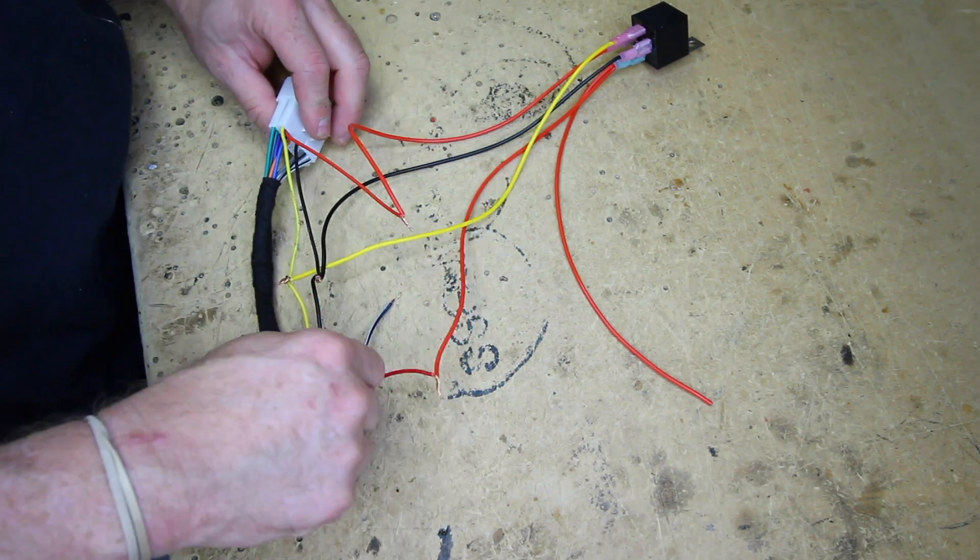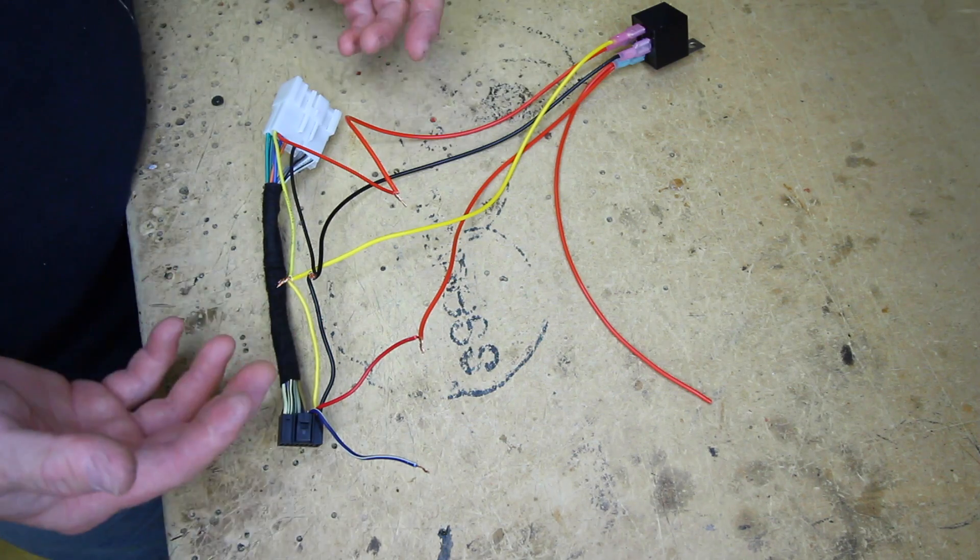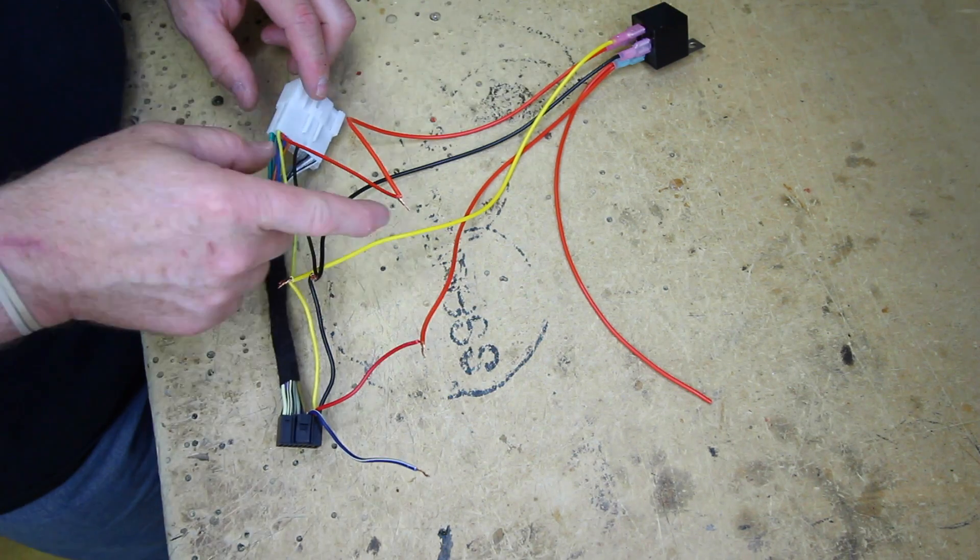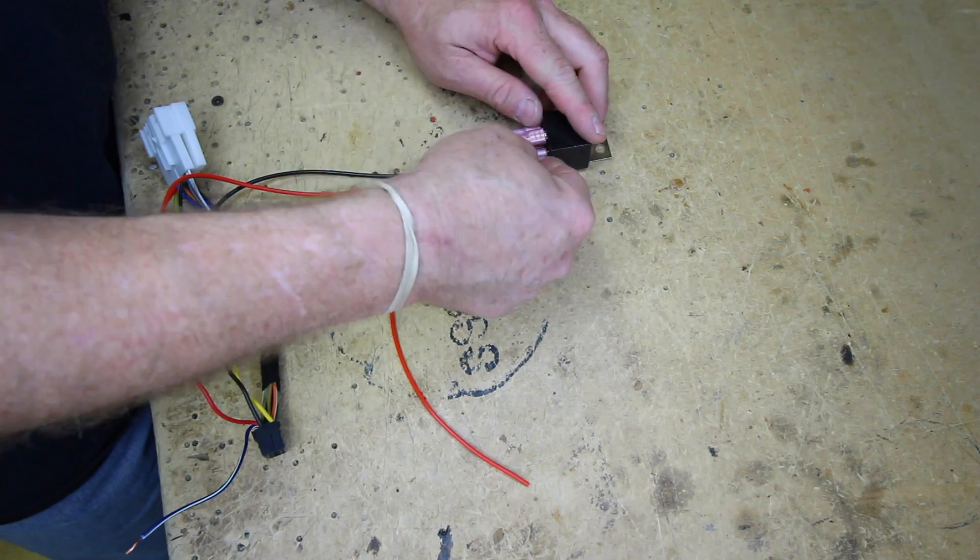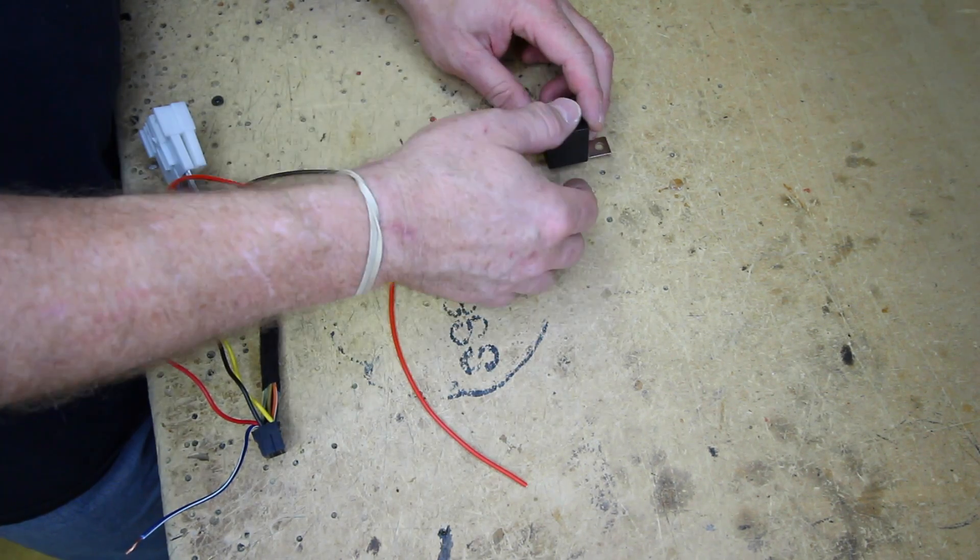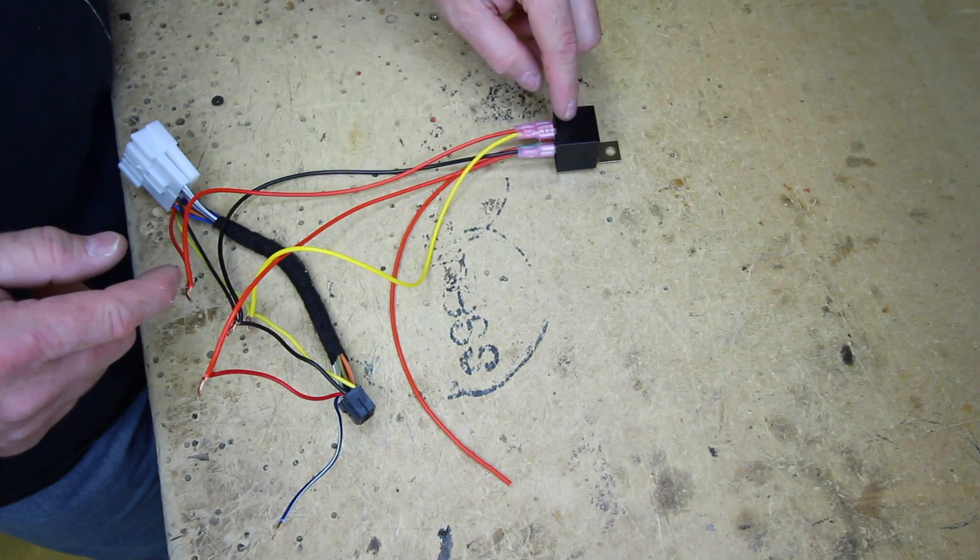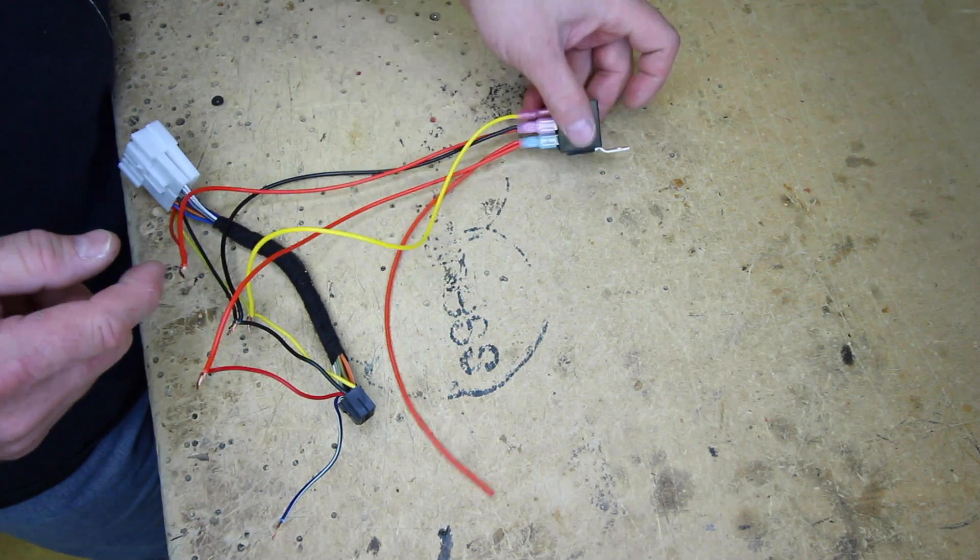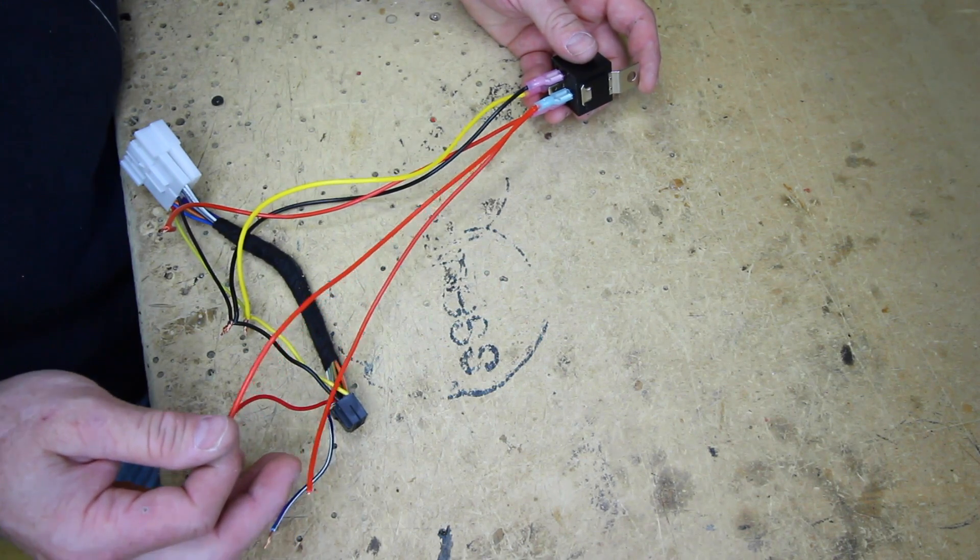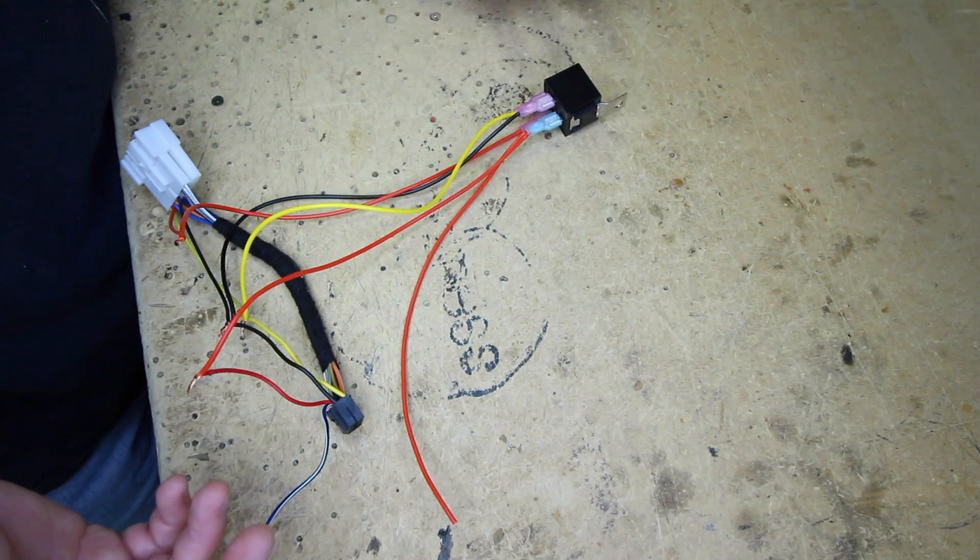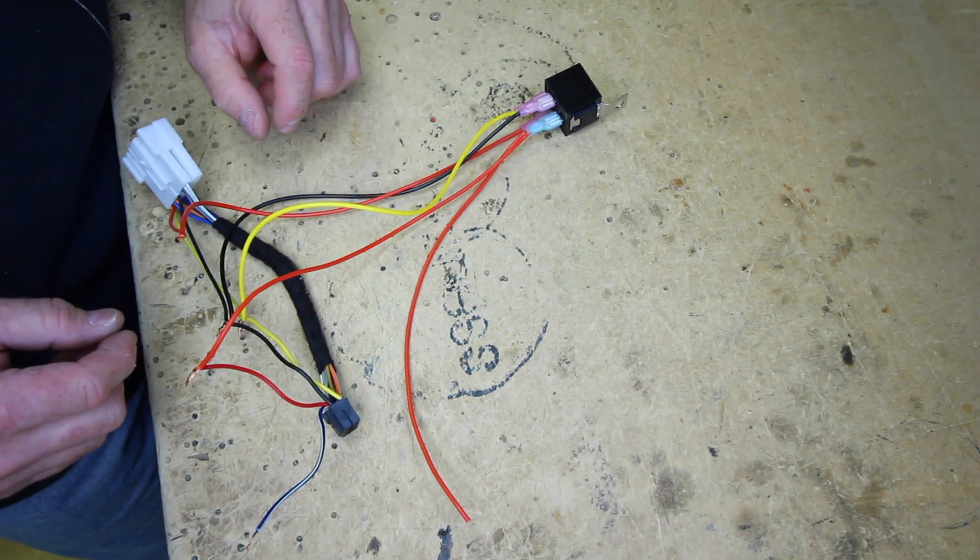So now what we've created is the accessories go into the relay to turn the relay on. The ground is there because we have a positive and negative. We need those two to charge the coil. The constant 12 volts is feeding into the relay and passing out to our new accessories. And that's it. So what this will do is give us two accessory outputs powered off of the constant 12 volts.